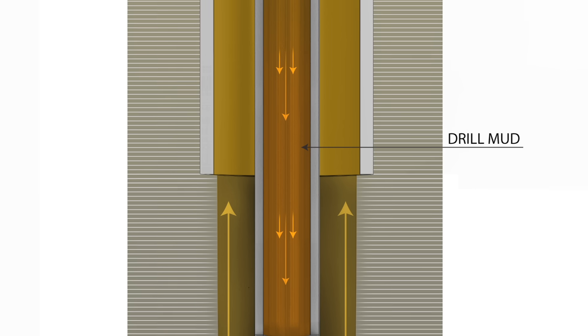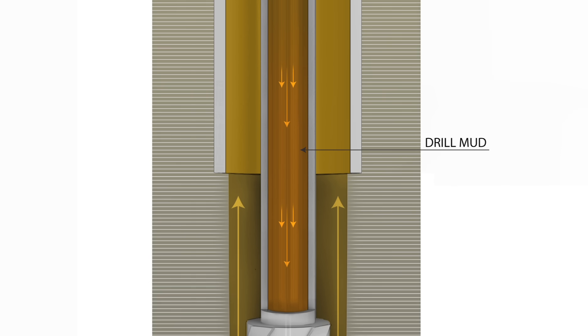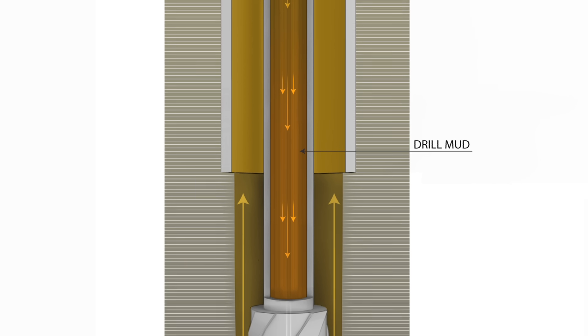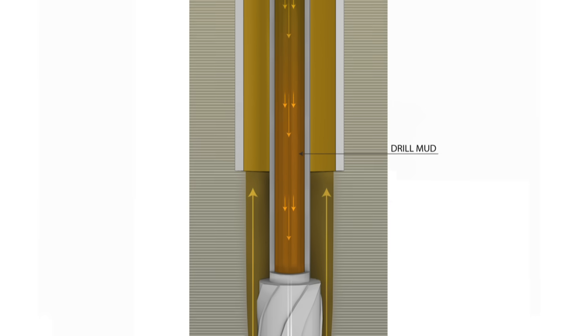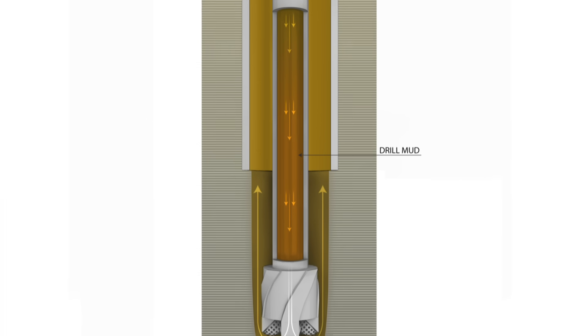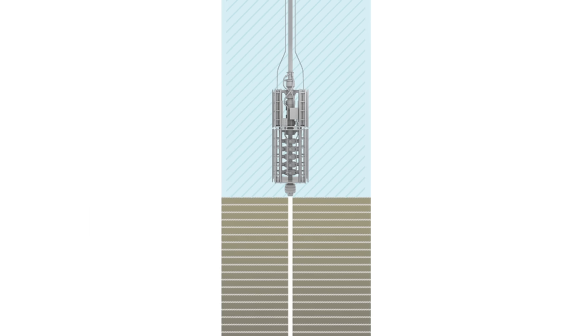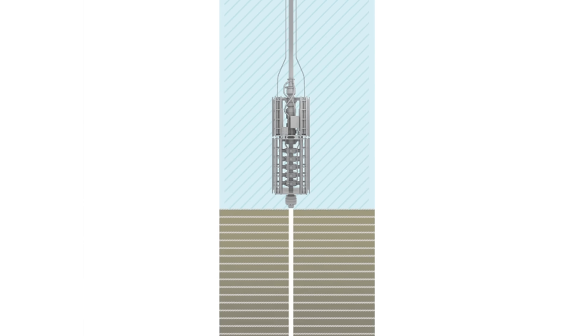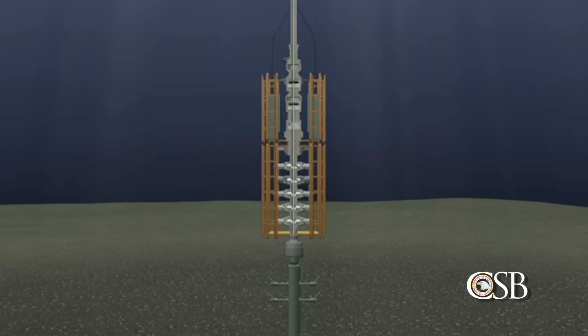To prevent kicks, drillers pump a dense slurry called drilling mud into the well, creating a barrier between the undersea oil and gas and the piping that leads to the rig. If this mud barrier fails or is somehow removed, the safety of the drilling crew depends on a critical piece of equipment located on the sea floor called the blowout preventer, or BOP.